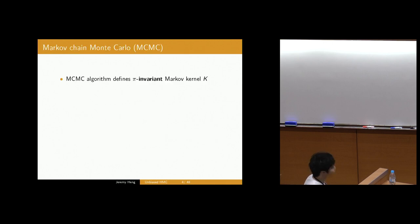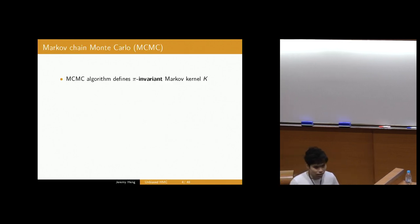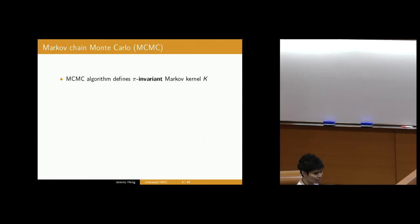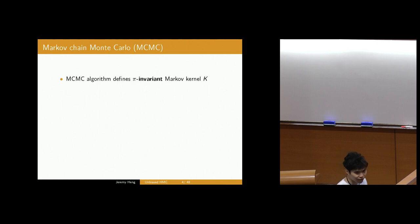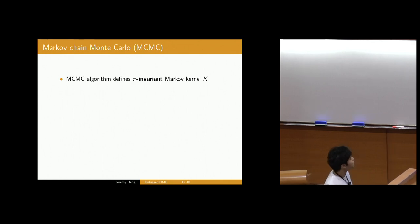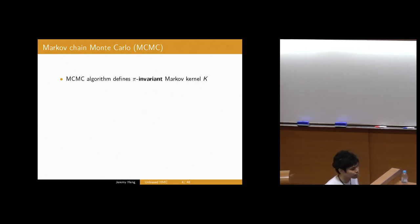The simplest Monte Carlo approach would be to sample IID from pi, in which case you return a simple sample average, which is a consistent estimator as you send the number of samples capital T to infinity by the law of large numbers. Obviously in practice, for most problems of practical interest, you wouldn't be able to sample directly from the target distribution pi, but what you could do is simulate a Markov chain that converges to pi as its stationary distribution. This is really the basis of all MCMC algorithms.